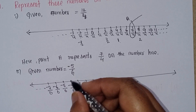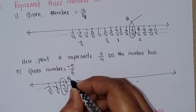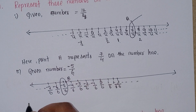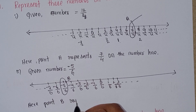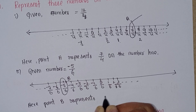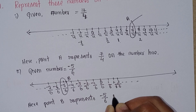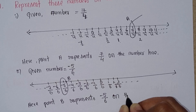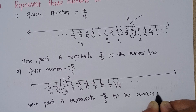Minus 5 by 6 — yes, point B is here. Point B represents minus 5 by 6 on the number line.